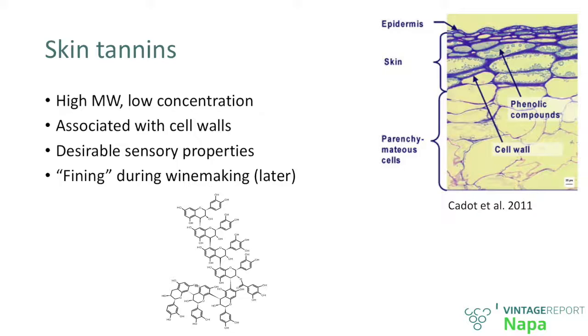The problem is, they are at very low concentrations. For example, in Cabernet Sauvignon Clone 8 from Eastern Washington State, the ratio of seed to skin tannins is five to one. So essentially, we have five times more tannins in the seeds relative to the skins. These skin tannins are particularly desirable, but the problem is that we cannot retain them in wine.